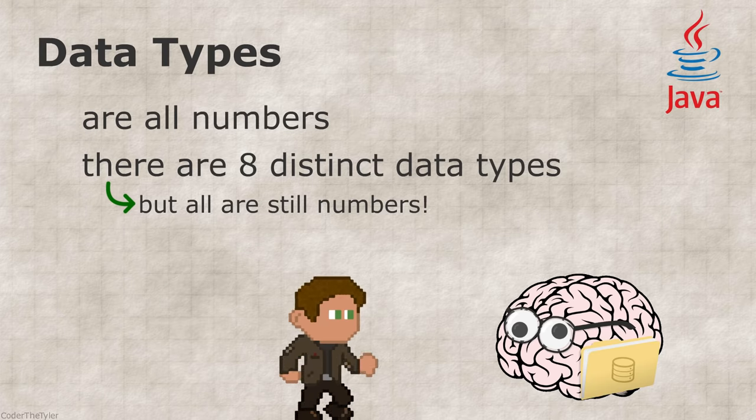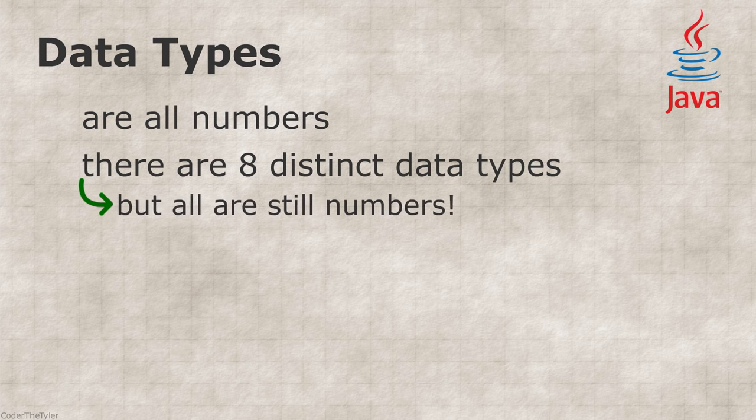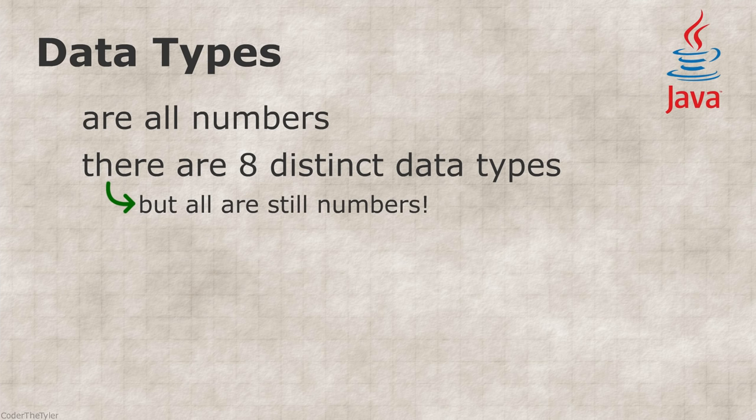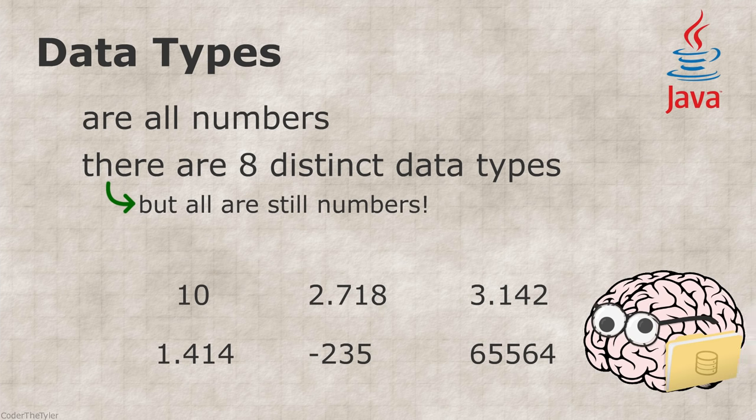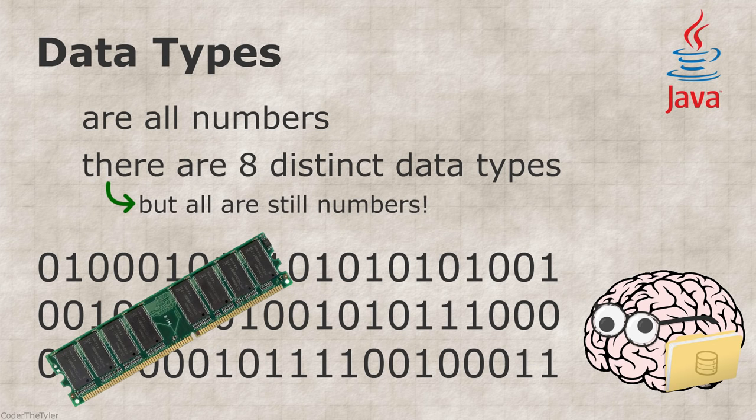You may wonder why there can't just be one type of data, a number. Why do there need to be so many different types of numbers? After all, how different can numbers be? Well, we have to remember that computers work in binary, and they have a limited amount of memory to store all of these numbers.